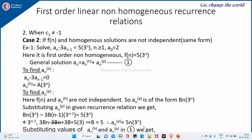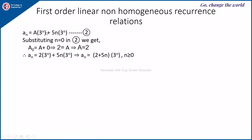Combining the homogeneous and particular solutions: aₙ = A·3ⁿ + 5n·3ⁿ. Since a₀ = 2 is given, substitute n = 0: a₀ = A + 0 = A, which implies A = 2. Therefore aₙ = 2·3ⁿ + 5n·3ⁿ. Taking 3ⁿ as a common factor, the final solution is aₙ = (2 + 5n)·3ⁿ.